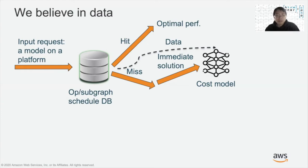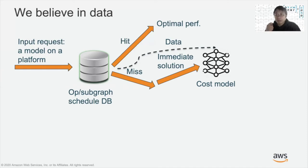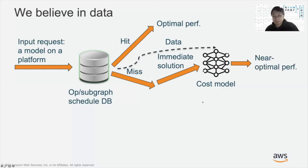Ten years ago, some of my lab mates at Princeton worked on supporting ImageNet infrastructure, and I heard enough stories from them about the big data magic — where large data leads to amazing results on the same algorithm where small data could not. The same thing happens here in our preliminary experiments. With our collected large amount of data, our cost model, without any fancy algorithms, could produce schedules with near-optimal performance. Later today, my colleague Cody will talk about the construction of the database and the cost model in more detail. We call this ongoing project LORIAN.